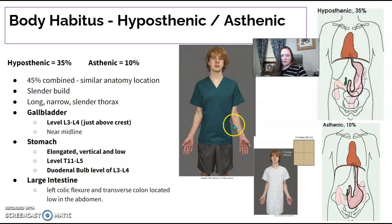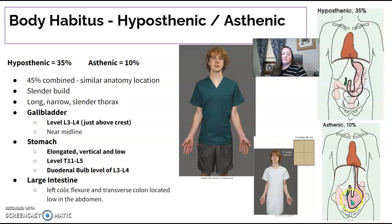The asthenic and hyposthenic are often combined — this is your more slender patient with a longer torso. They have a J-shaped stomach. The gallbladder is really low and close to midline, down and in, at L3, L4 — just above the iliac crest. The duodenal bulb is also at L3, L4, and the large intestine is very low in the abdomen as well.